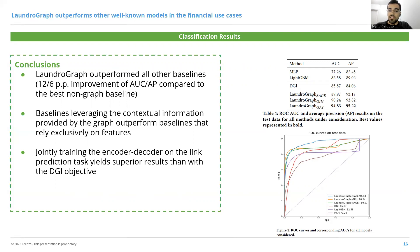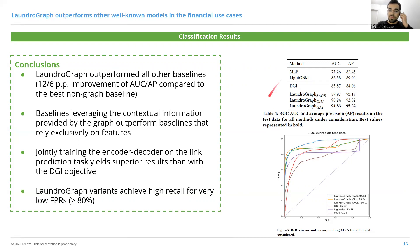We can also see that jointly training the encoder and decoder on the link prediction task achieves better results than training the encoder on a different self-supervised objective and then fine-tuning the embeddings for a decoder trained on link prediction. All LaundroGraph variants achieve very high recall for low FPRs — specifically, for very low FPRs, all LaundroGraph variants (which only change the message-passing operator) consistently achieve above 80% recall.